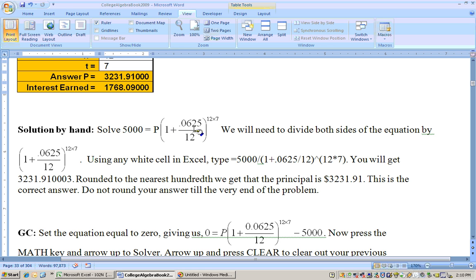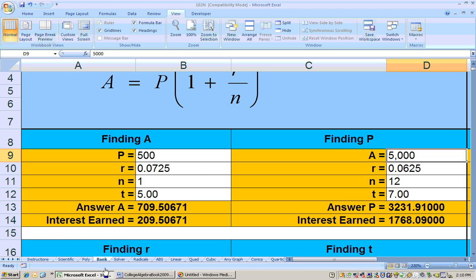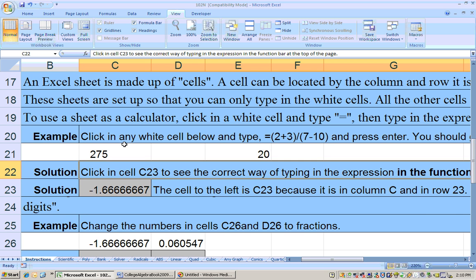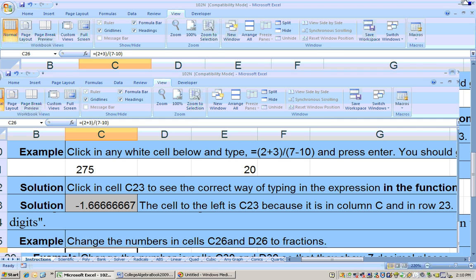Now, you could type that into any white cell on the Excel sheet. So again, I need to take 5,000 divided by this stuff, and I'll do that on any Excel sheet here. I'll tell you what, I'll just go back to the instruction sheet and use this cell here that gives you a lot of decimal places.